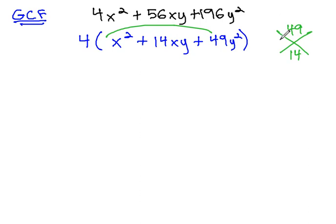There are not many combinations to try, and we quickly stumble on 7 times 7 is 49, and 7 plus 7 is 14.